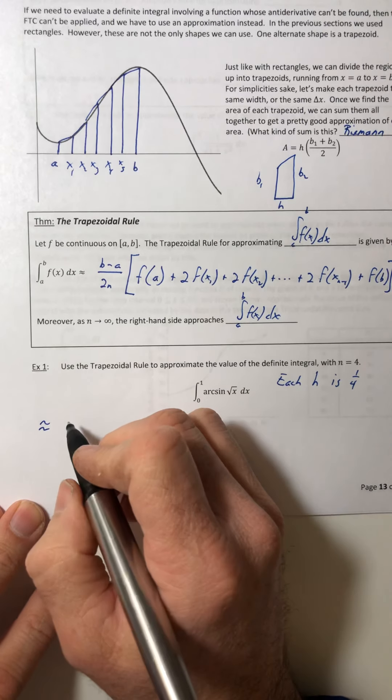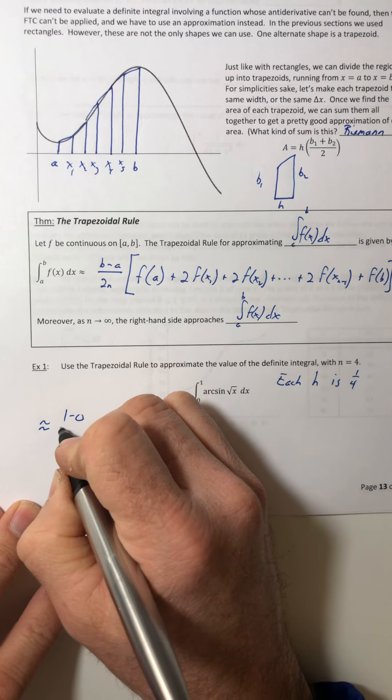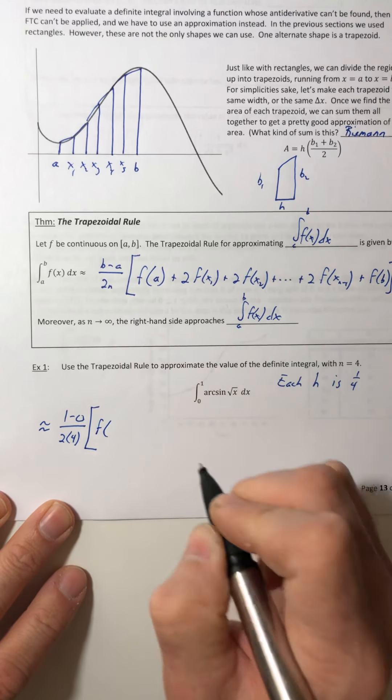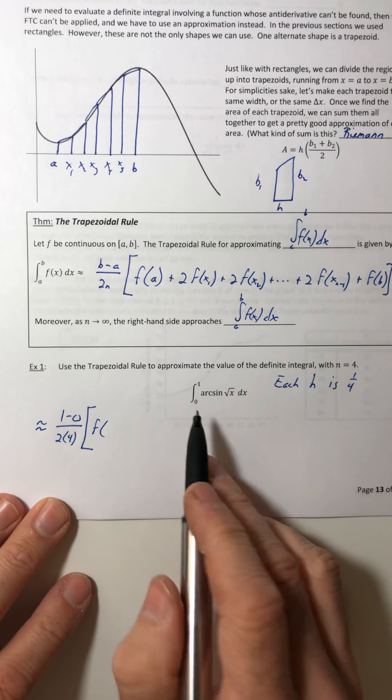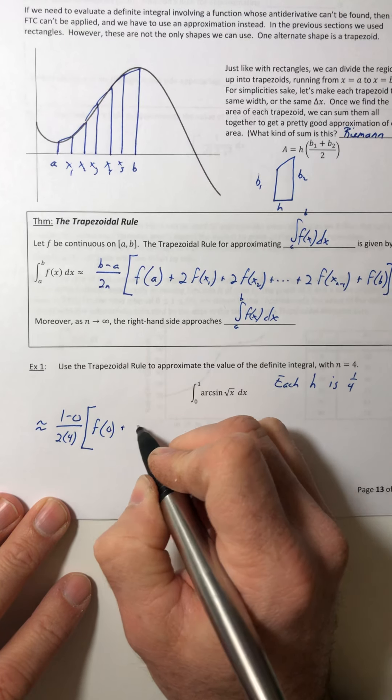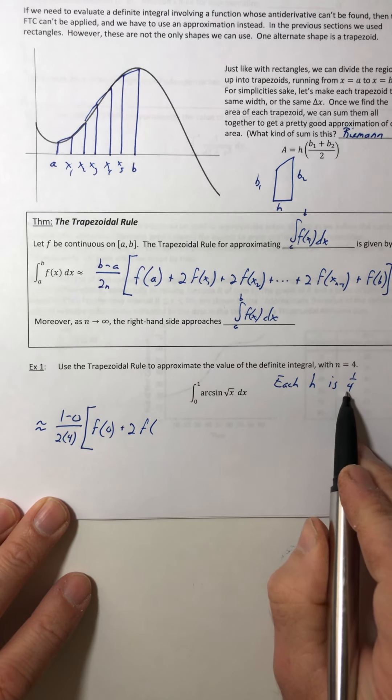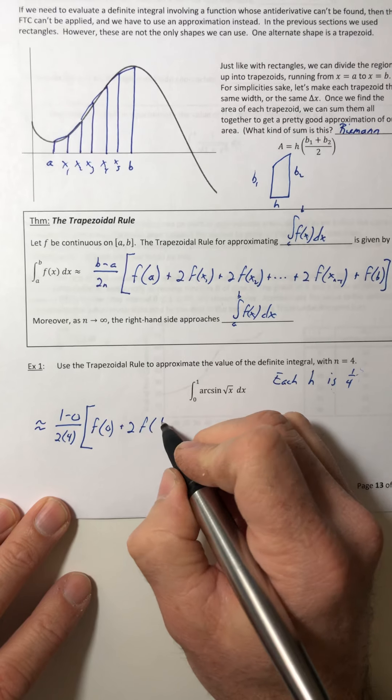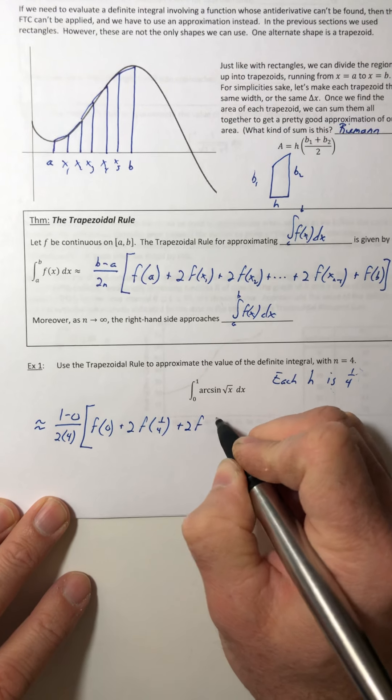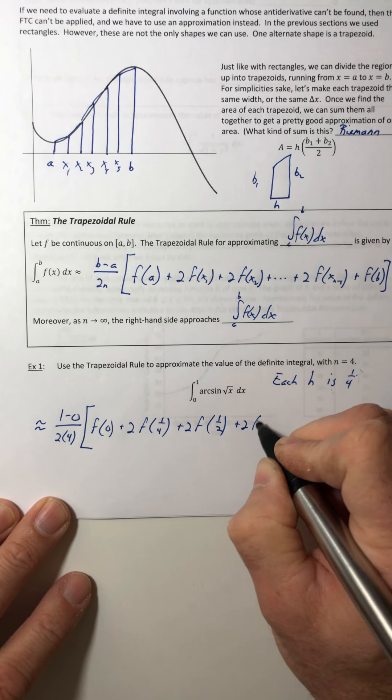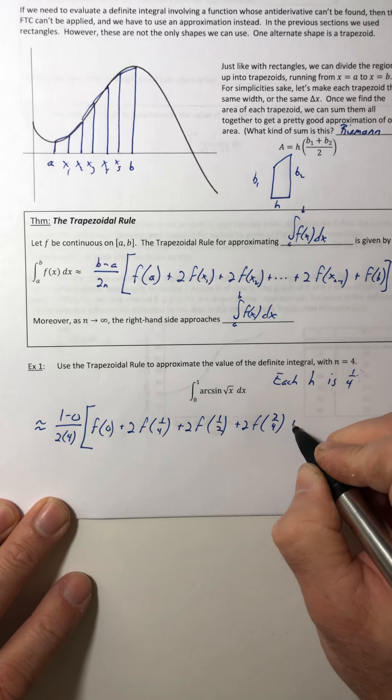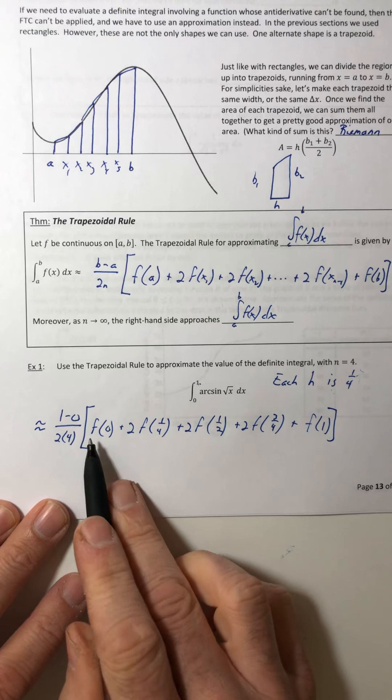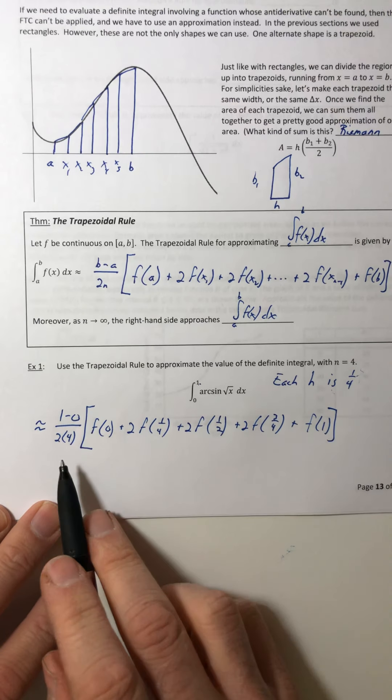Okay, so this definite integral is going to be approximately equal to, and we're just going to follow this formula out, so b minus a, so one minus zero over two times four. So we're going to start with the first x, so f of zero, and then you plug it in and then plus two f of, so each h is a fourth apart, so each spacing is a fourth, so just keep adding a fourth until you get all the way to your upper bound which is one.